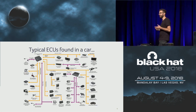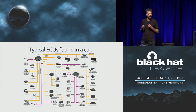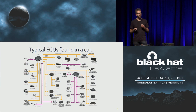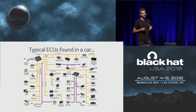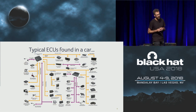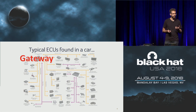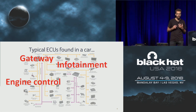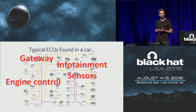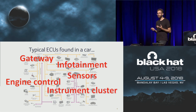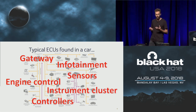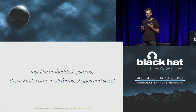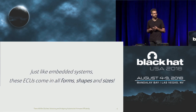Nowadays in a modern car there's a multitude of different ECUs all having their own functionality. This is a diagram of a modern car produced in 2018. You see there is a gateway, an infotainment system, engine controls, sensors, an instrument cluster, all sorts of controllers. And just like embedded systems these things come in all forms, shapes and sizes.